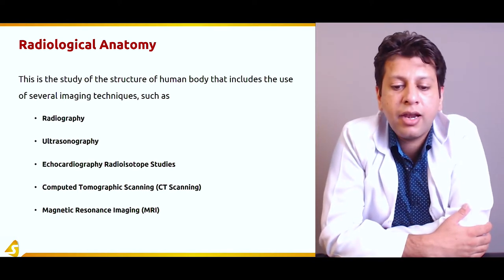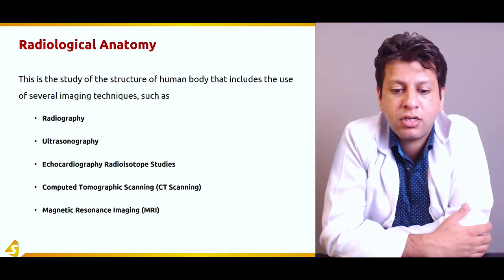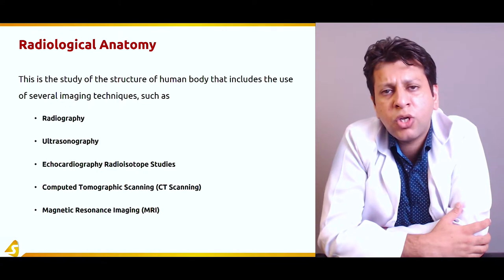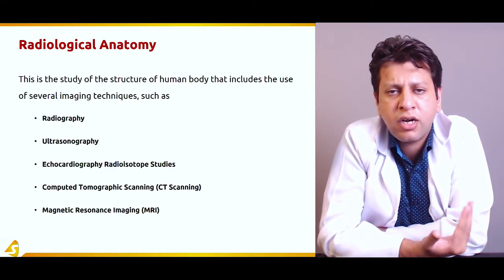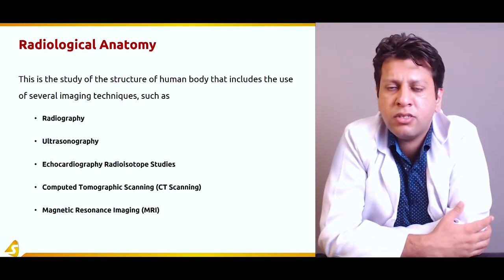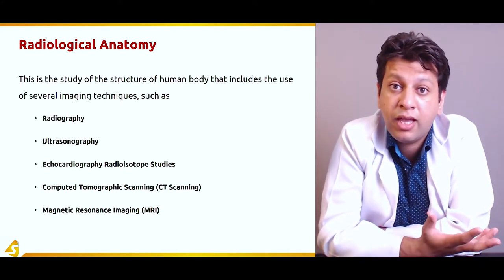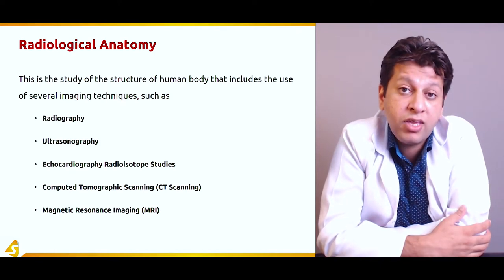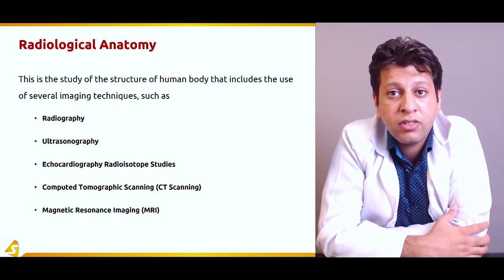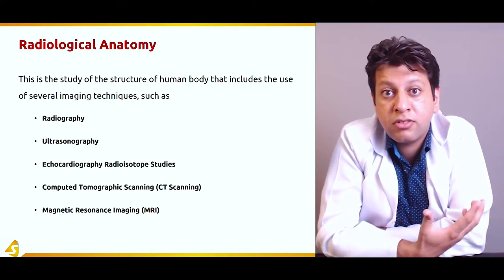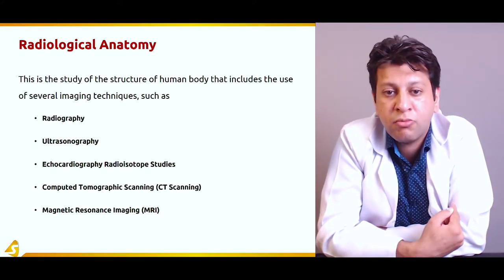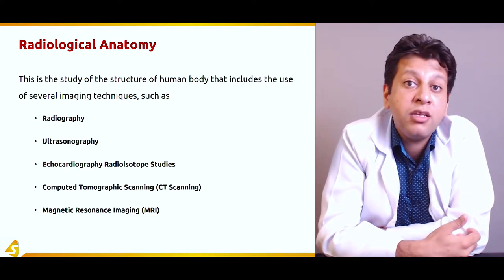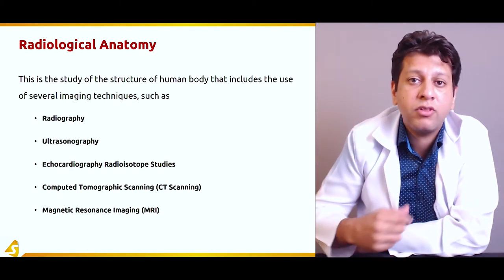Radiological anatomy is the study of the structure of the human body using several imaging techniques such as radiography, ultrasound, echocardiography, computed tomography (CT), and MRI. This is a relatively new field — X-rays were invented in the 20th century, ultrasound came in the 1970s, and echocardiography in the 21st century. These tools allow us to study anatomy without dissecting or applying a cut to the body, helping delineate anatomical structures and abnormalities without a scalpel.